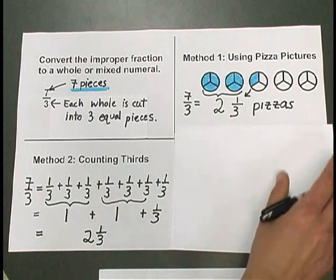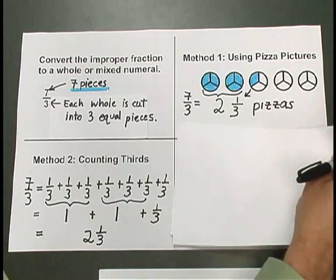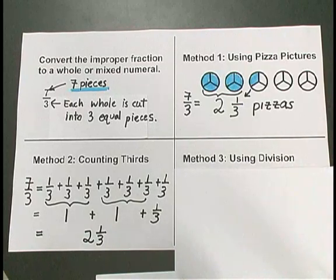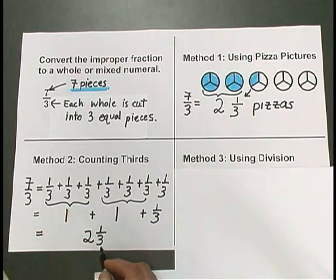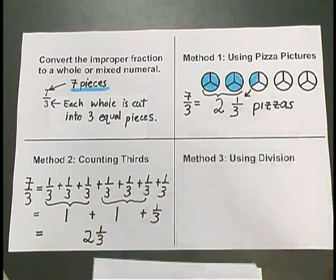Now, if the numbers involved are large, using pizza pictures or counting can be just too complicated. So we need a shortcut method in order to convert an improper fraction, like 7 thirds, to a mixed numeral, like 2 and 1 third. That's what our third method is.